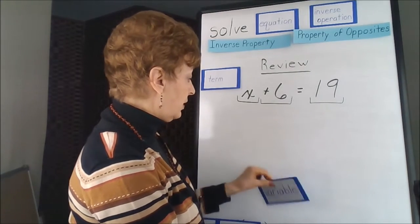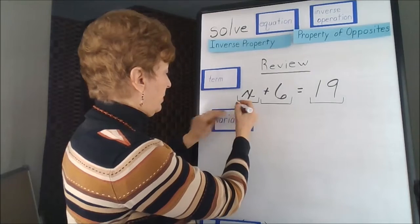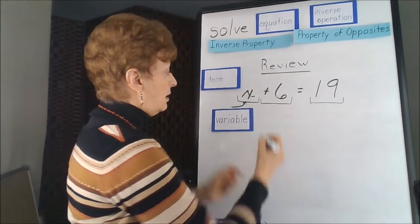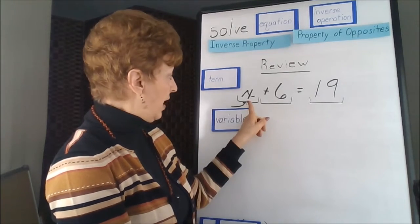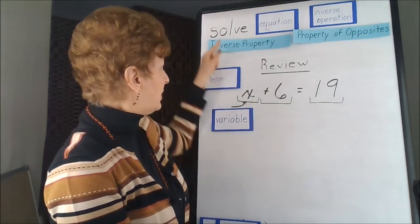Our variable in this problem is this x, variable meaning it could change its value. We don't know its value at this point. That's why we would be solving.